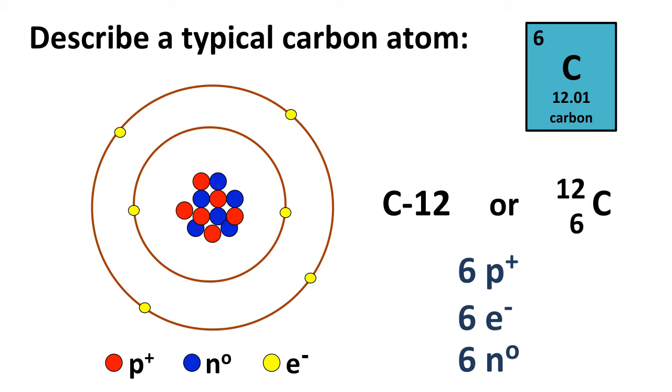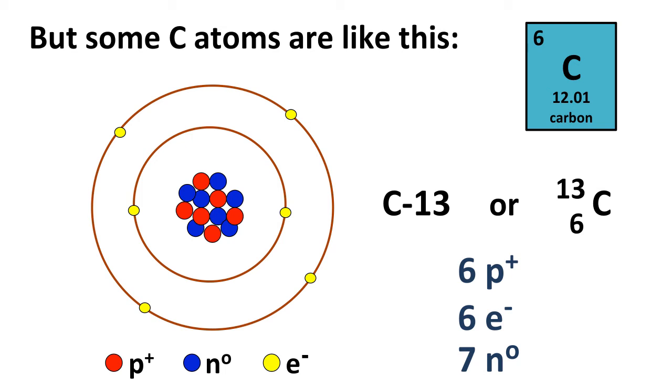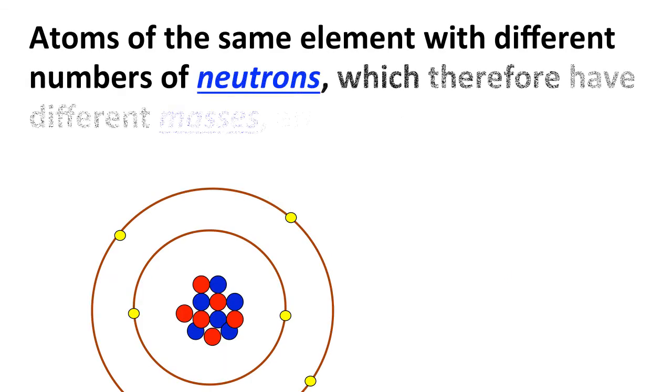Now it turns out that there are also some carbon atoms that look like this. And watch closely. They have one more neutron. Well, since they're carbon, they still have six protons and six electrons, but now since they have one more neutron, they have a mass number of six plus seven or 13. So this would be the type of carbon atom that we would symbolize by C13. We can also have C14, we can also have C11, differing numbers of neutrons. And this happens for every element.